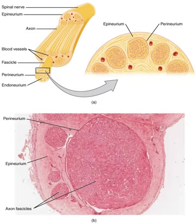A nerve conveys information in the form of electrochemical impulses known as action potentials, carried by the individual neurons that make up the nerve. These impulses are extremely fast, with some myelinated neurons conducting at speeds up to 120 meters per second. The impulses travel from one neuron to another by crossing a synapse, where the message is converted from electrical to chemical and then back to electrical. Nerves can be categorized into two groups based on function.